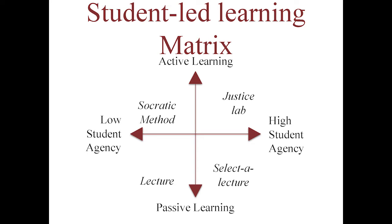I co-run a course called the Justice Lab, which is at the top right of the spectrum — very active learning style with no lecturing and a very high level of student agency; they get to pick exactly what they're working on. A traditional lecture course sits in the bottom left quadrant: students don't get to choose what they're lectured about and it's very passive. There's also a bottom right option I called 'Select a Lecture,' where students pick the topic and then the lecturer speaks on it — very passive. I think some homeschooling books work a little like that, but it's not common.